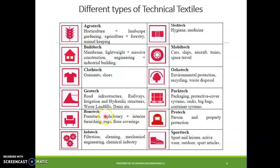Home-tech covers furniture, upholstery, interior furnishings, rugs, and floor coverings. Industrial textiles are used for filtration, cleaning, mechanical engineering, and the chemical industry — technical textile materials serve many purposes in these fields.